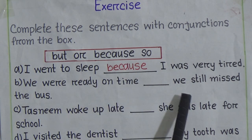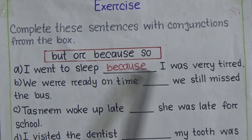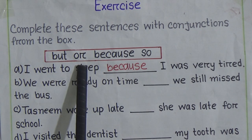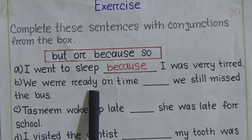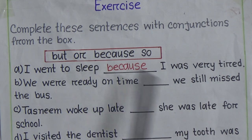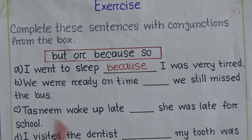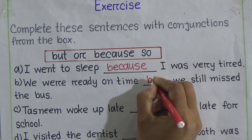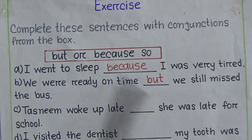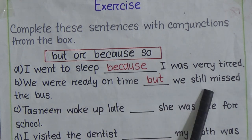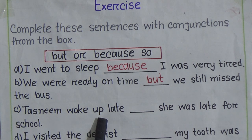Number b: 'We were ready on time ___ we still missed the bus.' This is a positive sentence, but we still missed the bus - so the meanings are contrasting. The correct answer is 'but': 'We were ready on time but we still missed the bus.' In the gap you write 'b-u-t'.